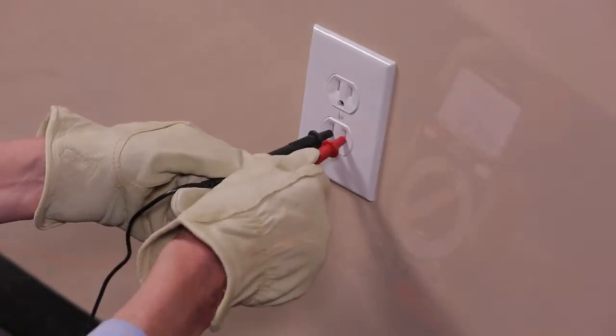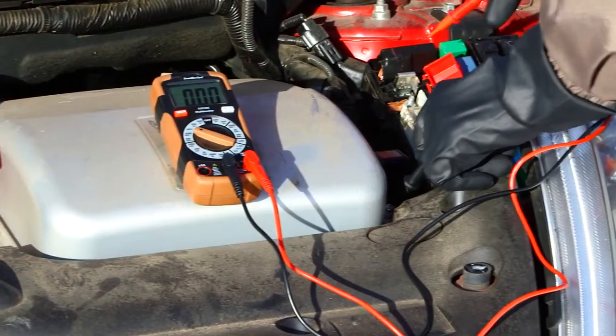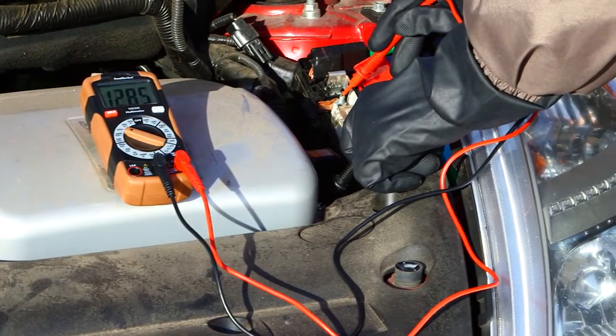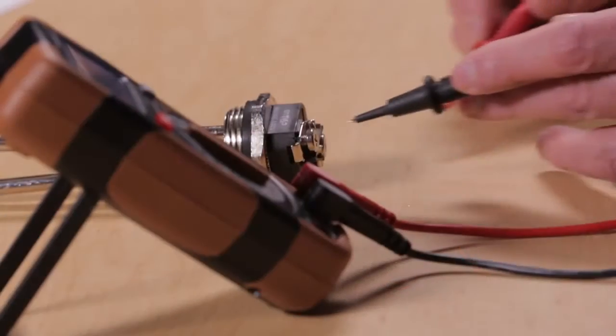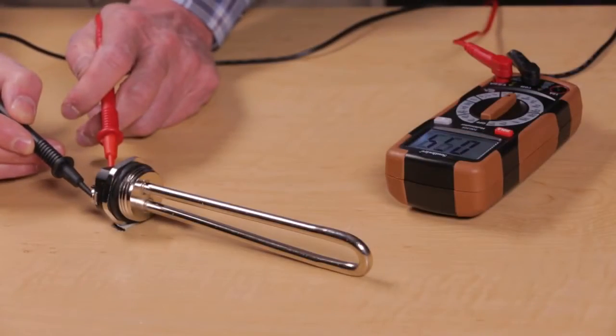The meter measures AC voltage for testing household wiring and appliances, and DC voltage for testing automotive and electronic circuits. The meter also measures resistance for checking motor windings, heating elements, and electrical connections.